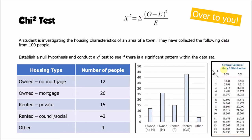Over to you. A student is investigating housing characteristics in an area of a town and has collected data from 100 people on housing type — whether they own with or without a mortgage, rent privately, rent from council or social housing, or have some other arrangement. The bar chart shows rented council or social housing appears significantly higher than the others. Please pause the video and have a go at establishing a null hypothesis, conducting a chi-squared test, and interpreting your result using the critical values table.